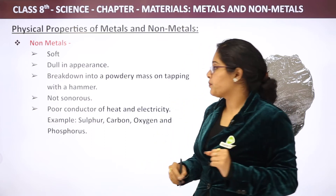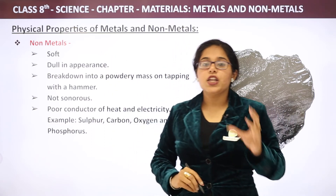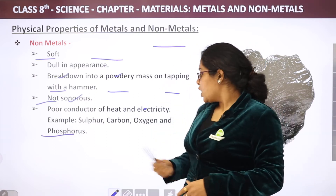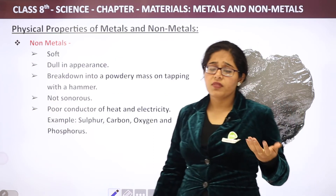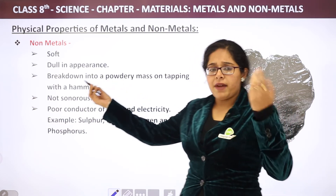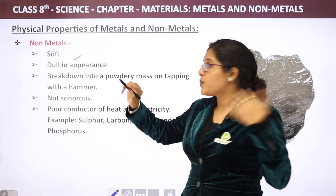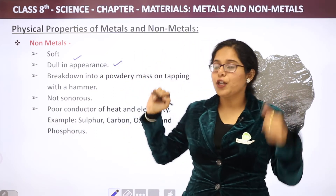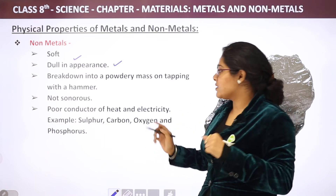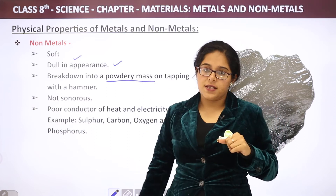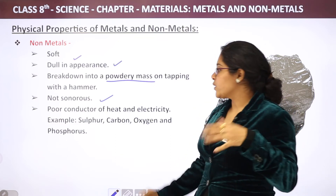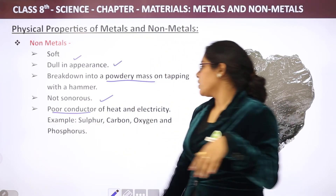Before we talk about non-metals, note that metals and non-metals have opposite properties. The word 'non' means their properties will be different from metals. Metals were hard — non-metals are soft. Metals were lustrous — non-metals are dull in appearance. Metals, when beaten, break down into sheets, but non-metals break down into a powdery mass. Metals were sonorous — non-metals are non-sonorous.